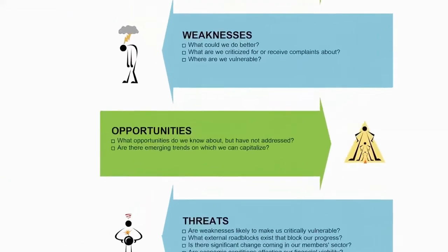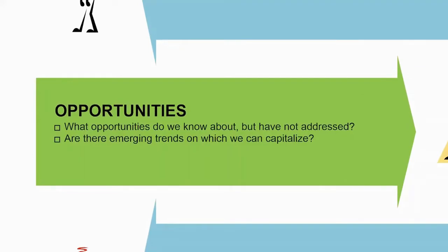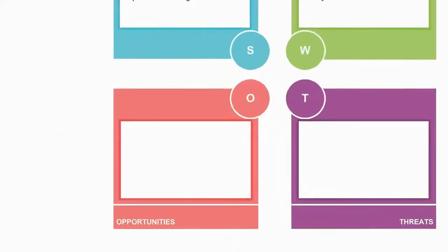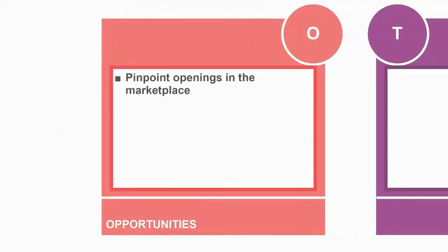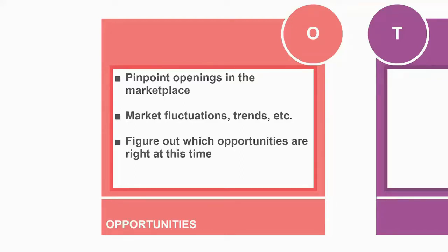Now, you will try to identify the opportunities available for your business — try to pinpoint openings in the marketplace that you can take advantage of to help your business grow. These opportunities are caused by external factors such as market fluctuations and trends. Always consider your strengths and weaknesses when assessing these opportunities. An opportunity might be right for your company at the moment, or it may not be too far down the line.